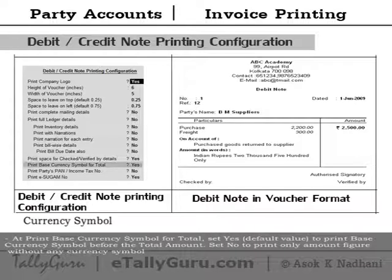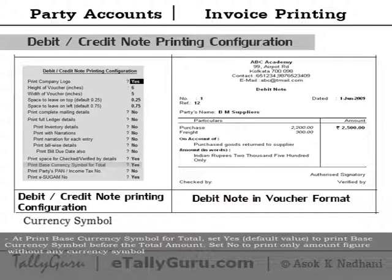For currency symbol, at 'Print base currency symbol for total' set yes to print the base currency symbol before the total amount, or set no to print only the amount figure without any currency symbol.